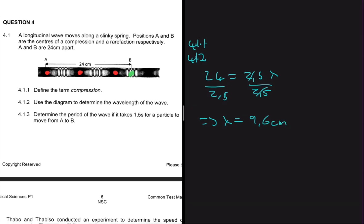Now for 4.1.3, the question says to determine the period of the wave if it takes 1.5 seconds for a particle to move from A to B — that is, 1.5 seconds to travel 2.5 wavelengths.